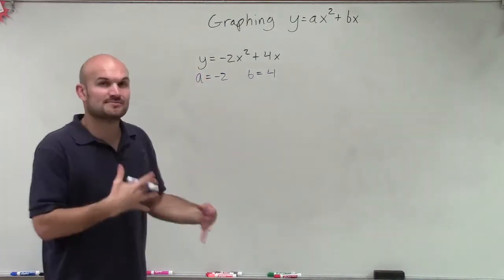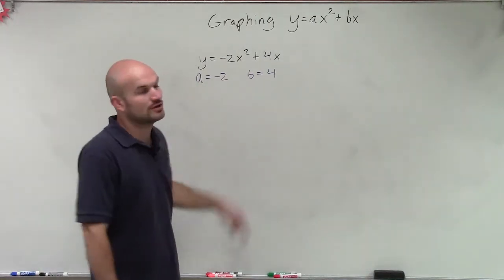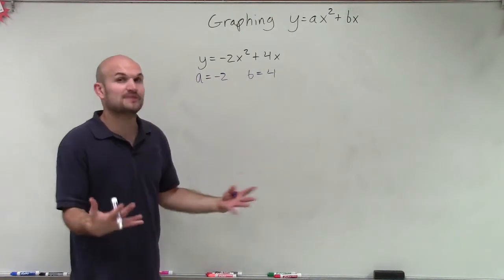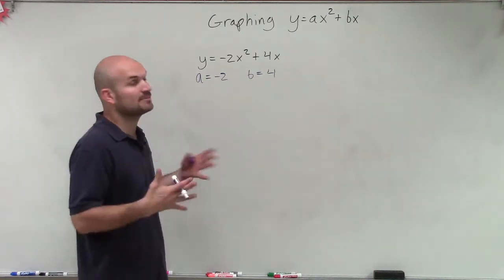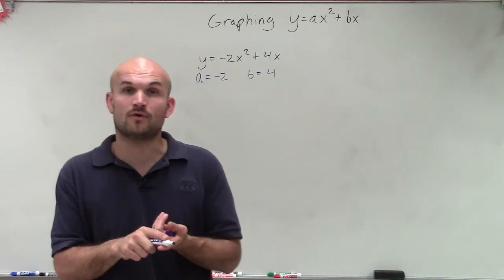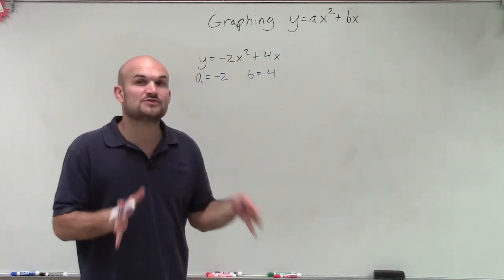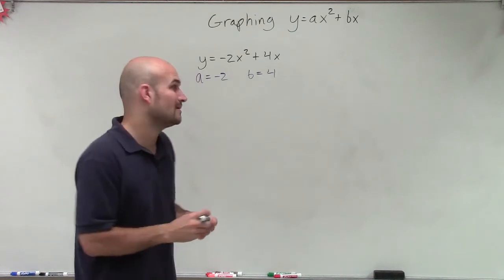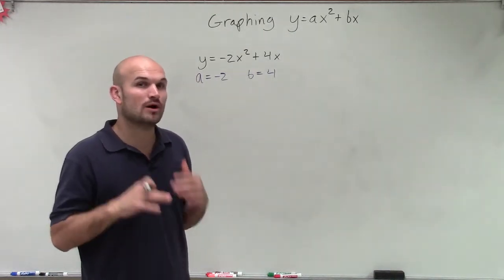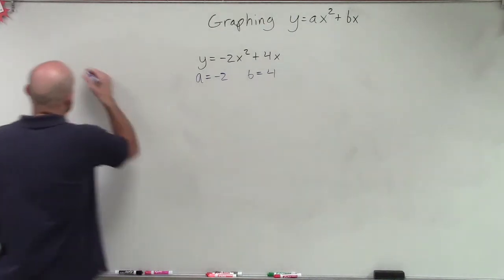We're going to learn different ways of factoring out and graphing to see what the transformations are going to be. If we just want to graph using a table of values, we use the same process as with y equals ax squared and y equals ax squared plus c. In those equations, the axis of symmetry was always at 0. Now our axis of symmetry is not always going to be at 0, so we need to first find it.